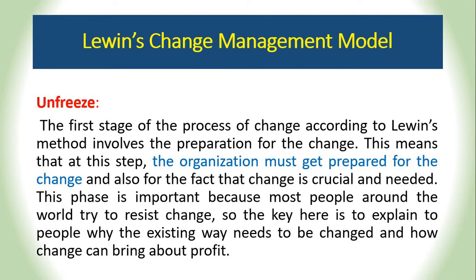The first stage is unfreeze. This is the first stage of the change process according to Lewin's model, and it involves preparation for change. In this stage, the organization identifies the problem — whether the strategy is not okay, whether performance is not doing well, whether operational activities are not going well, or whether the structure is not perfect. They need to collect data, analyze it, make a strategic plan, and analyze the internal and external environment. At this stage, the organization must get prepared for the change.